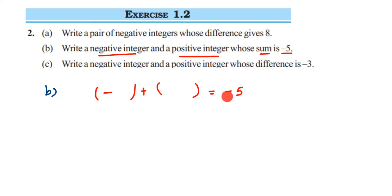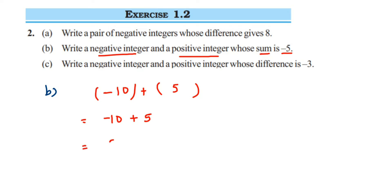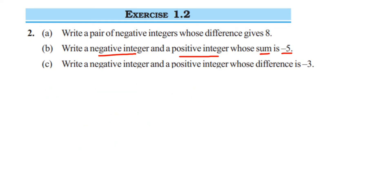You can take minus 10 and 5 — let's see what happens. So this is minus 10 plus 5. We're adding integers with different signs, so we subtract: 10 minus 5 is 5. You put the sign of the greater number — 10 is greater and its sign is negative — so the answer is minus 5.